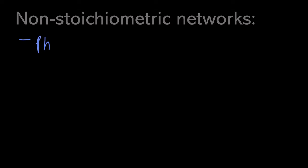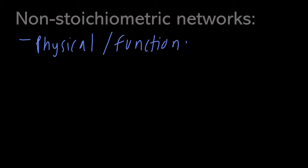In contrast, non-stoichiometric networks do not take into account the laws of mass conservation or kinetic rate laws, but instead they describe some physical or functional interaction or relationship between molecular species. These are becoming increasingly popular with the vast amounts of high-throughput data being collected in current research.